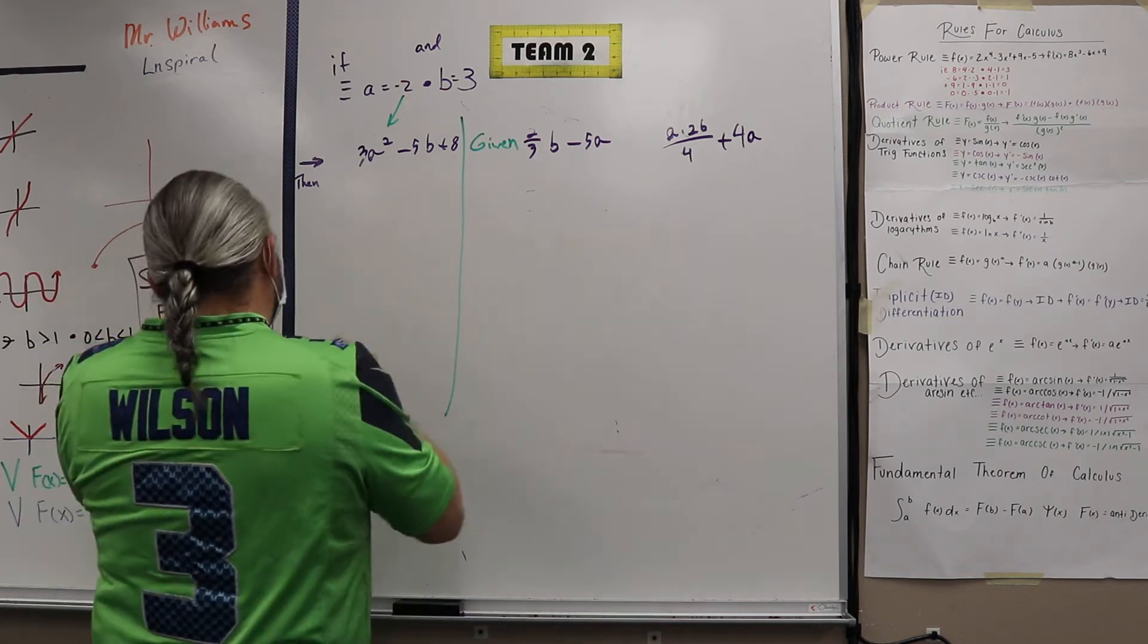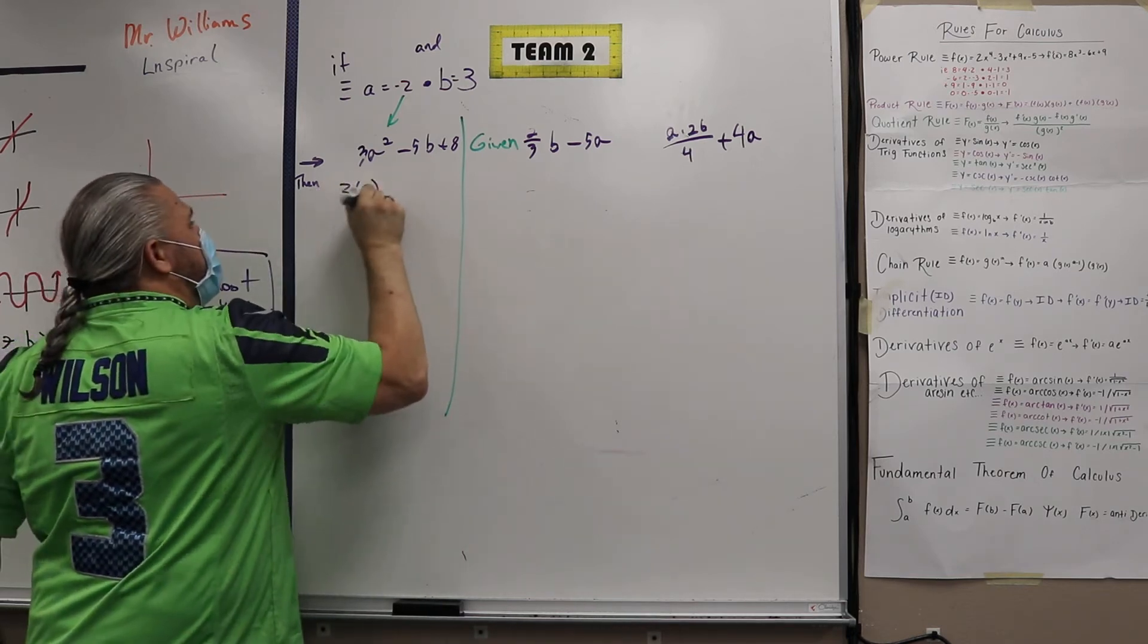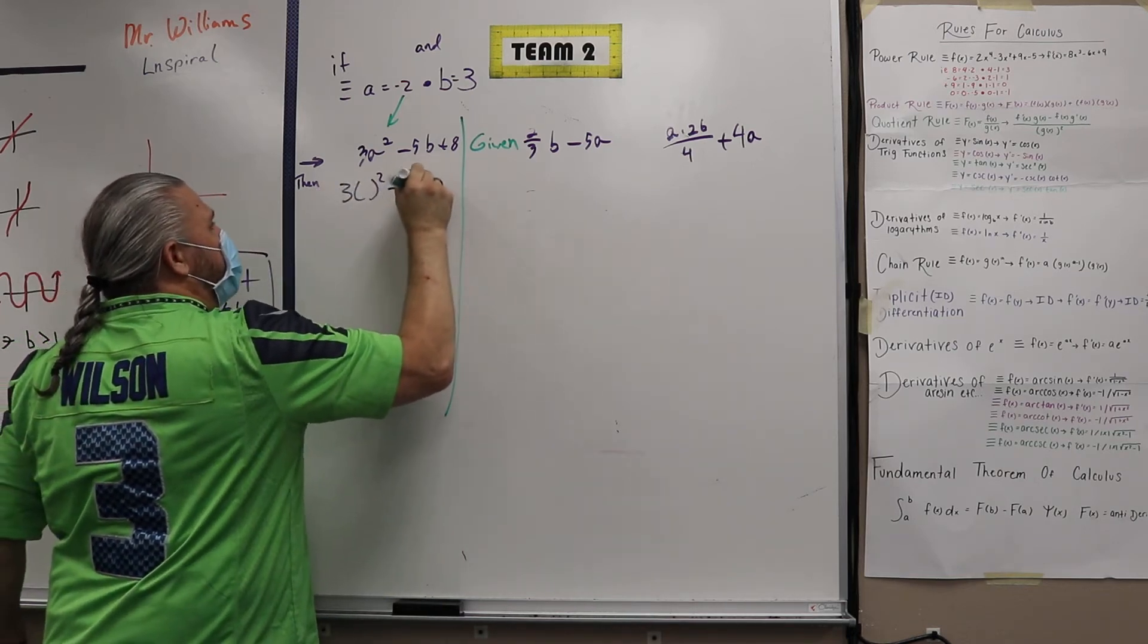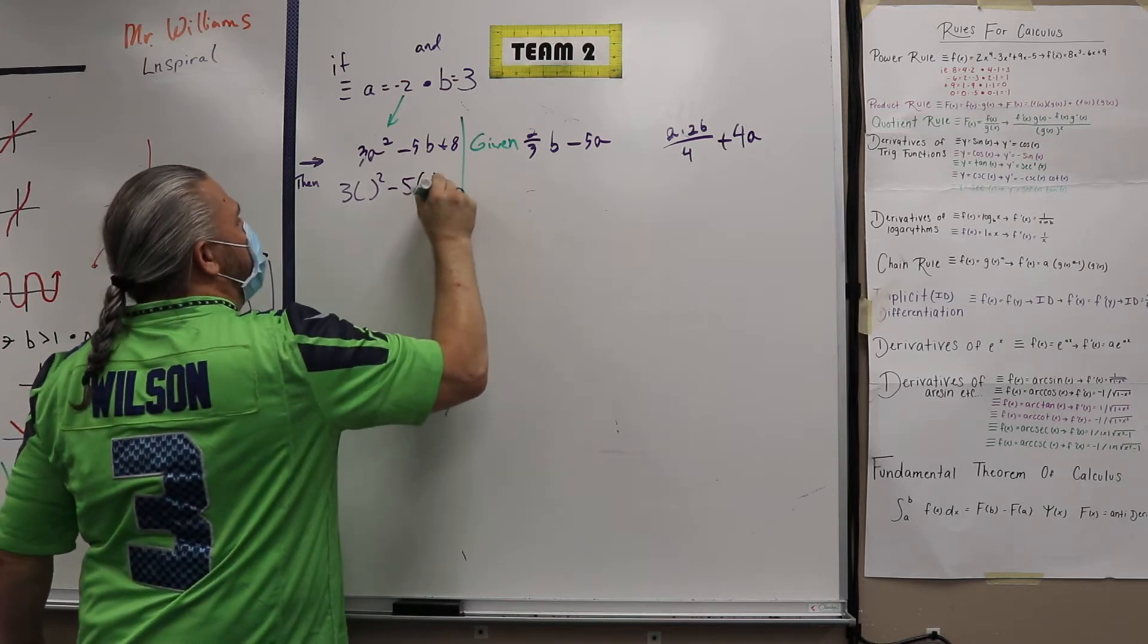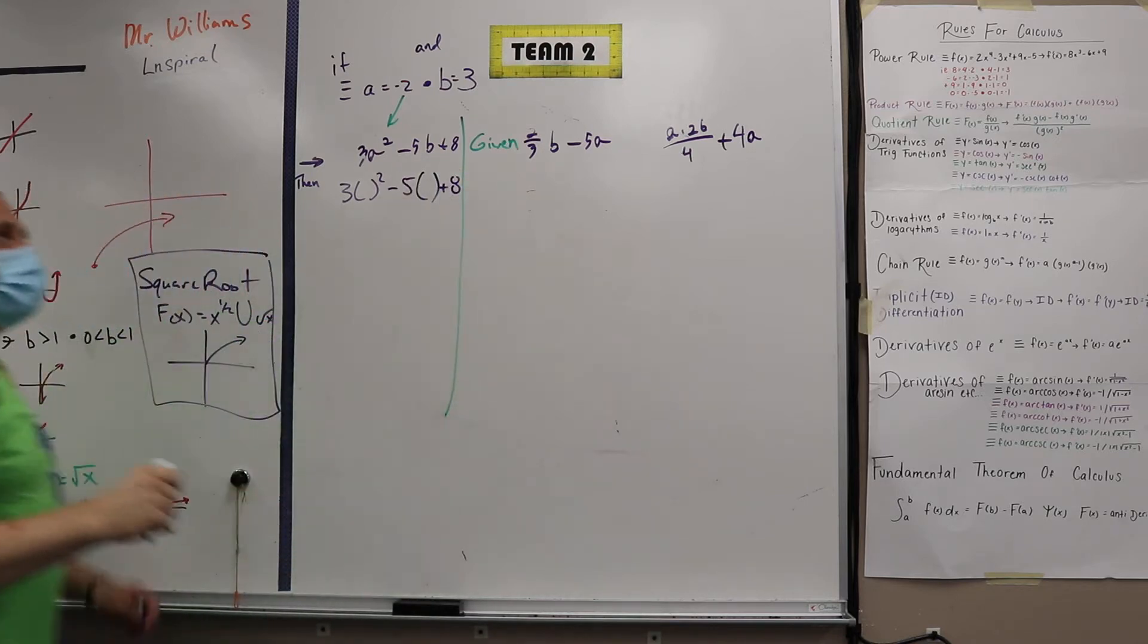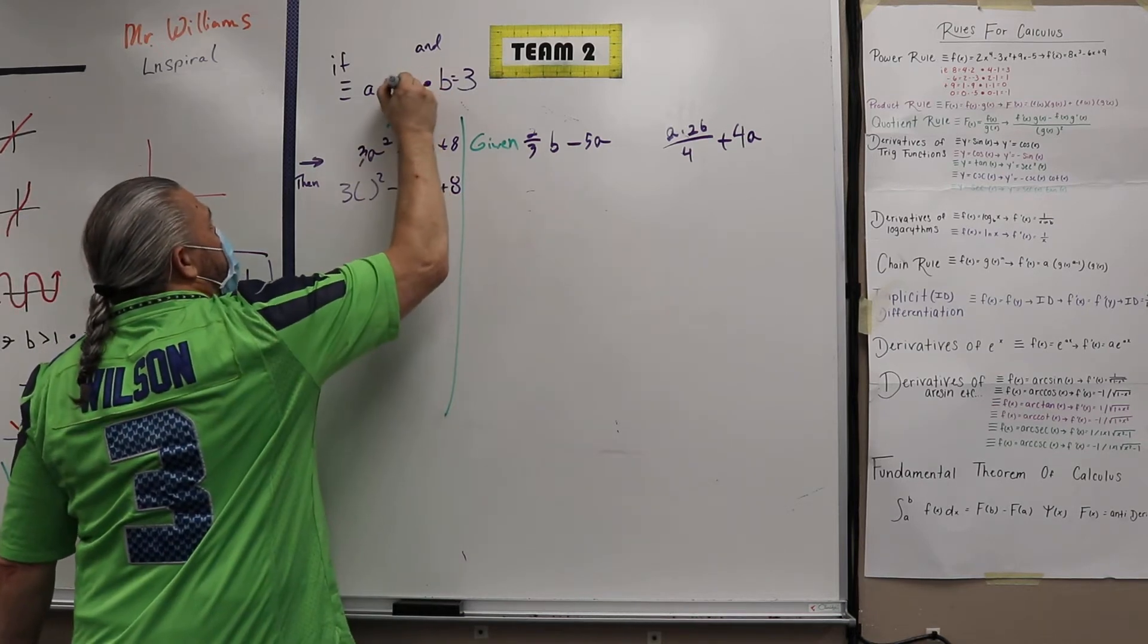So I'm going to say I have three a squared minus five b plus eight, right? And so I need to put them in. I need to put in this negative two.